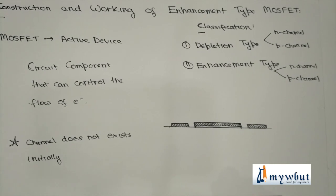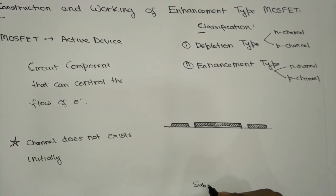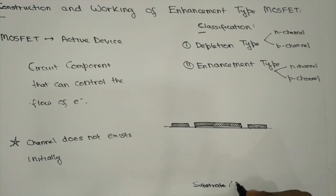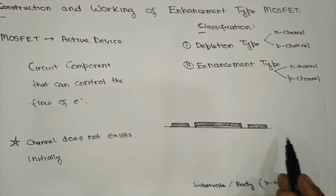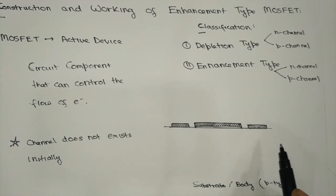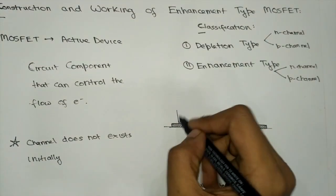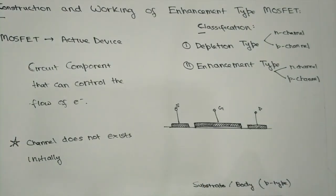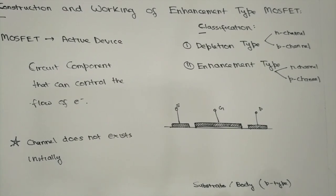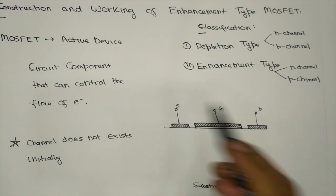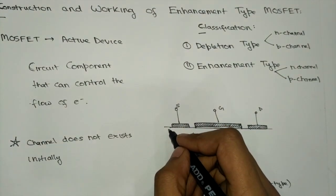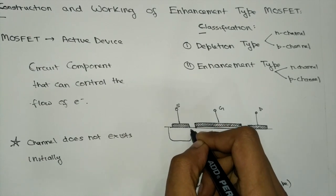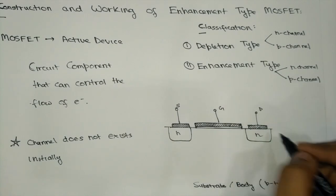Now we have to do the construction of enhancement type MOSFET. In N-channel enhancement type MOSFET, the substrate or body is made up of P-type material. There are four main terminals present in the MOSFET: source, gate, drain, and substrate or body. The source and the drain are doped with N-type material.